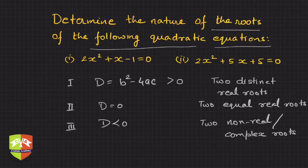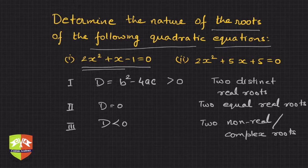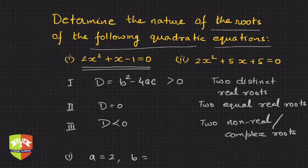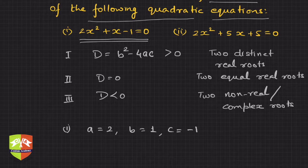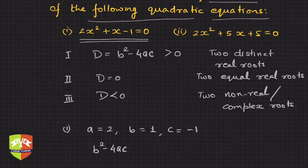Now we are going to apply this concept, so please keep this in mind. In the first equation, a is 2, b is 1, and c is minus 1. So let's calculate the discriminant: D = b² - 4ac.